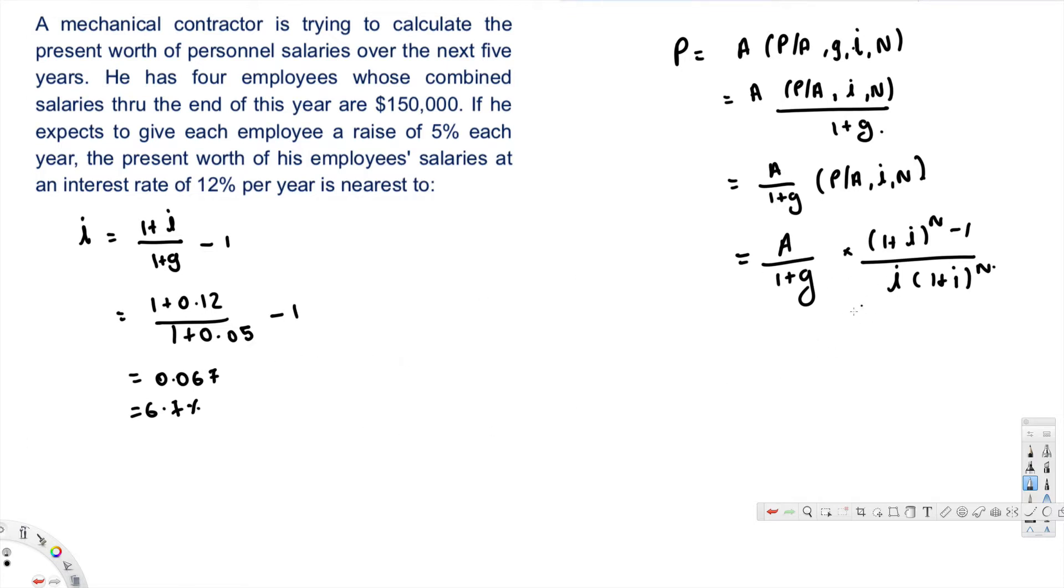Since we have i, g, and everything, let's go and plug it in the equation. P is equal to A—A is $150,000—$150,000 divided by 1 plus g, which is 0.05, multiplied by [(1 plus i)—we just calculated that's 6.7%, that is in decimal 0.067—to the power of 5] divided by [0.067 times (1 plus 0.067) to the power 5].